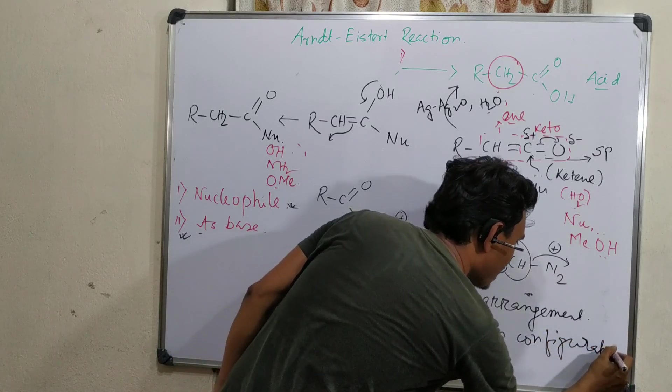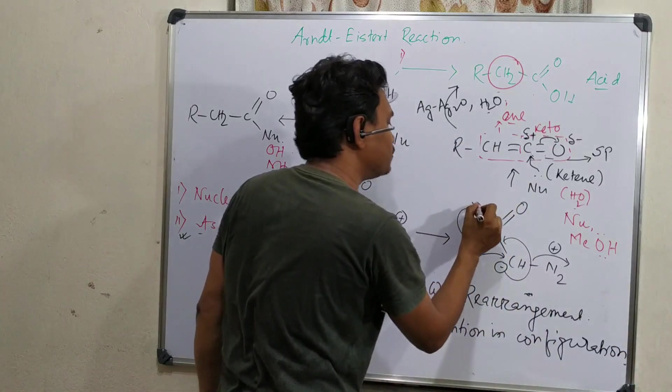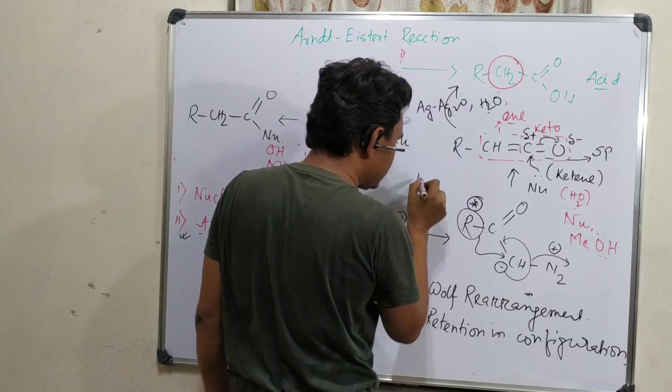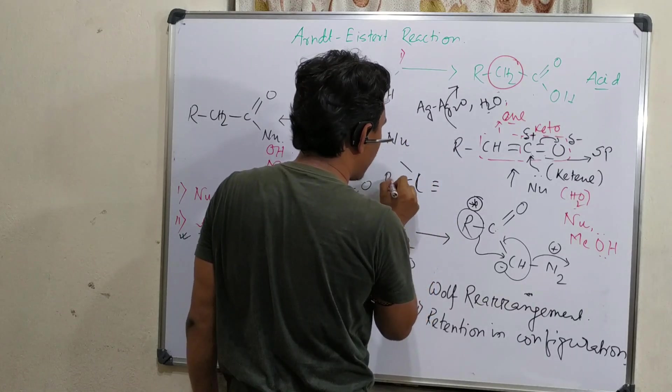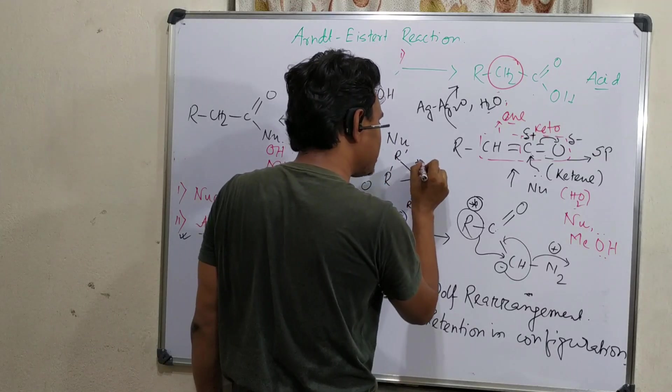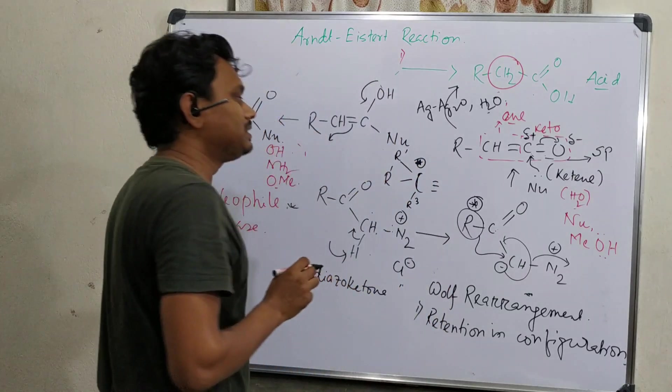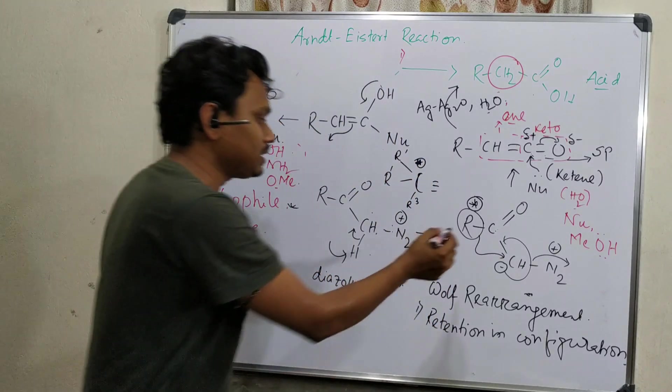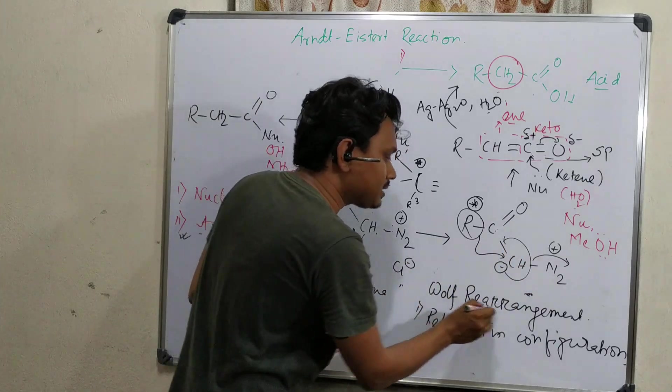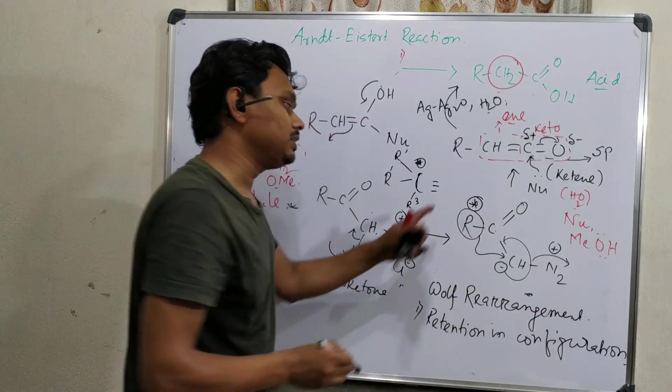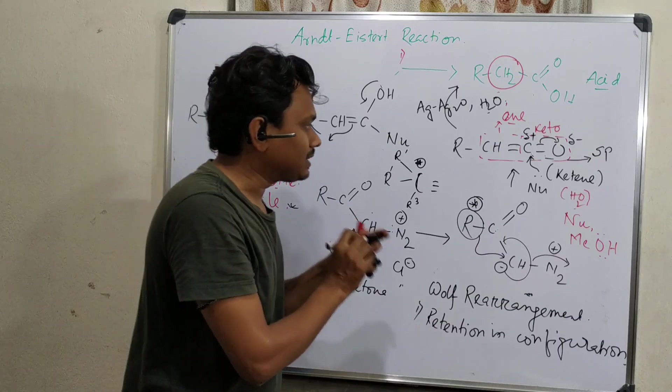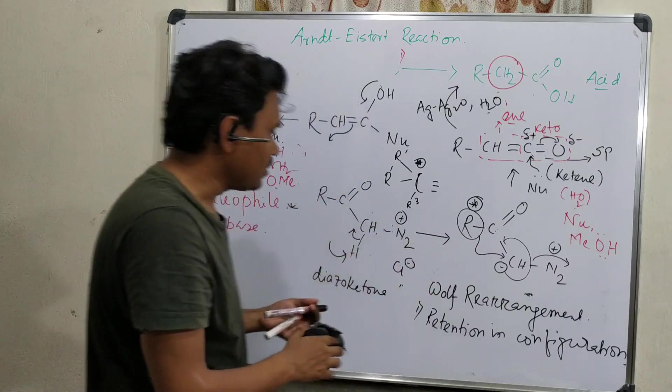What do I mean? I mean if the R group is asymmetric. If we consider this C with R1, R2, R3, and this is an asymmetric center, then the asymmetry is maintained after this rearrangement. I will explain in detail because not only this, Wolf rearrangement can also be done in terms of light also. So that thing, I shall explain it in a subsequent video.